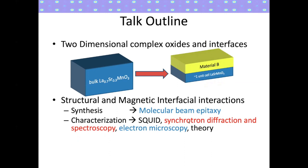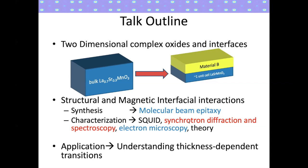My talk today will focus briefly on how we grow these materials and characterize them using a wide range of techniques. We use bulk SQUID magnetometry to determine the magnetic moments as we reduce the dimensionality. We also use synchrotron X-ray diffraction to determine to very high precision the atomic-scale structures of these ultra-thin systems, combined with high-resolution microscopy and theory, to understand why physical properties are strongly dependent on thickness.